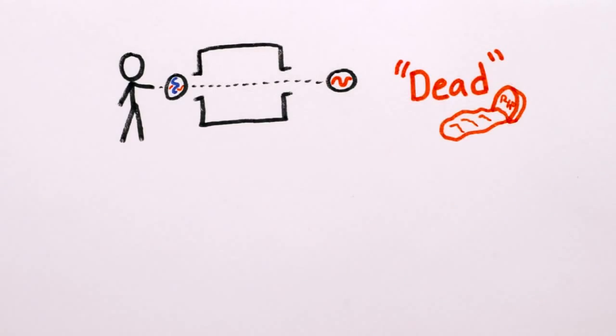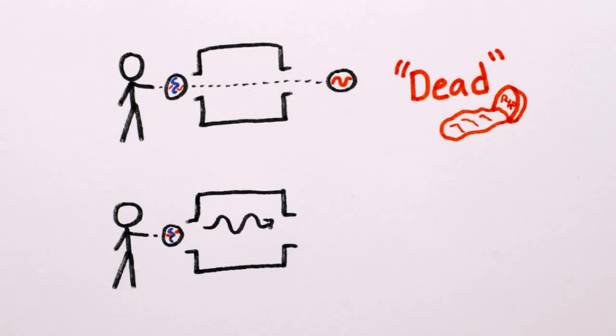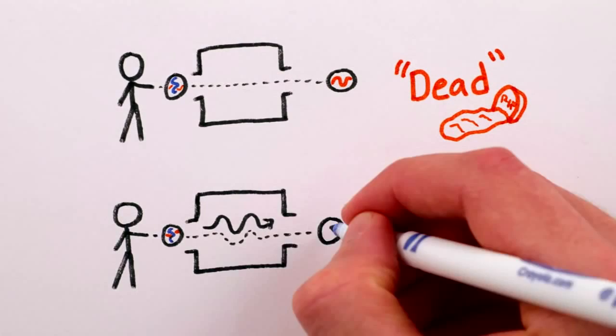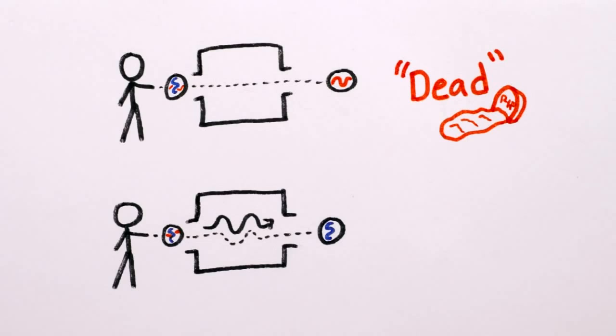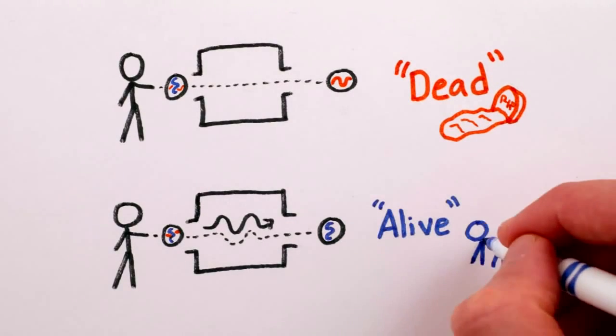But if there is a photon in there, and we carefully send the atom through so it doesn't actually destroy the photon, the atom-photon interactions change the odds. So now it's an overwhelming chance that we see that atom as alive.